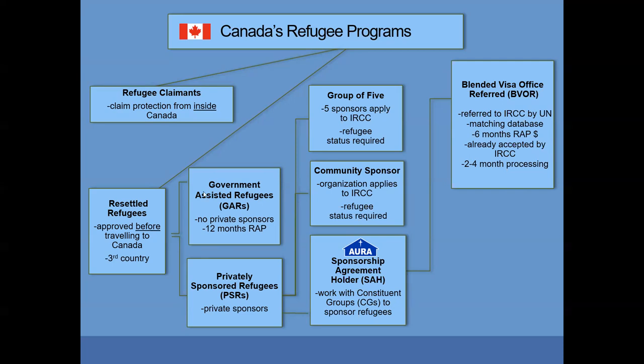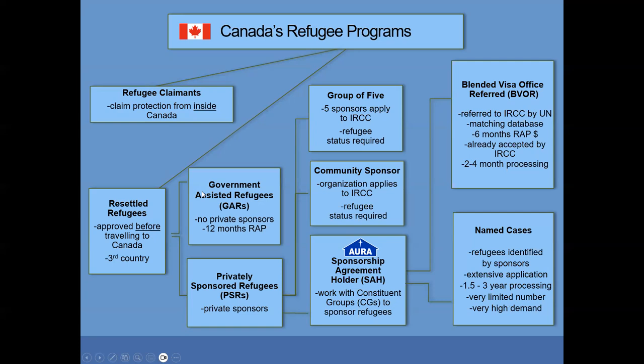We also sponsor named cases. Named cases refer to applications where the refugees are identified by sponsors, and there's an extensive application process. Usually it takes anywhere from one and a half to three or even more years for IRCC to process a named case application.